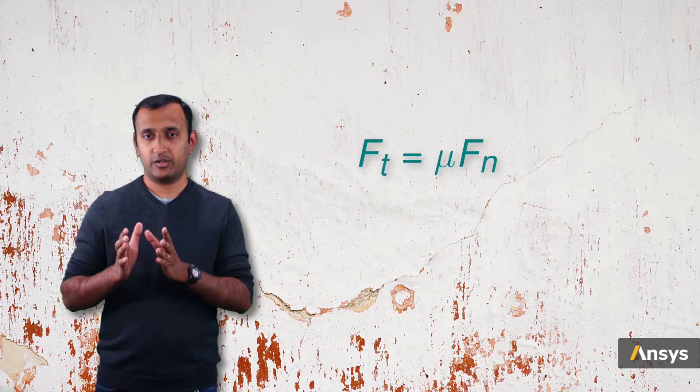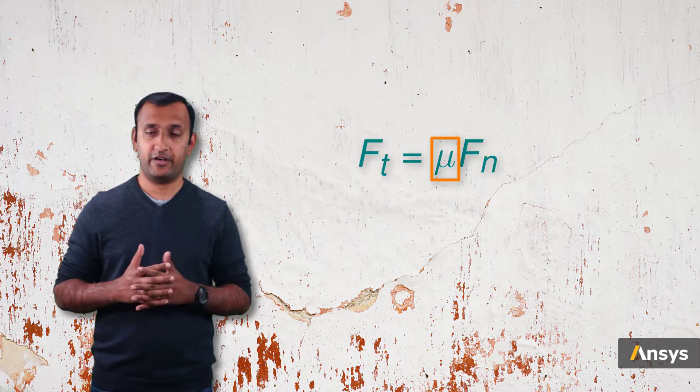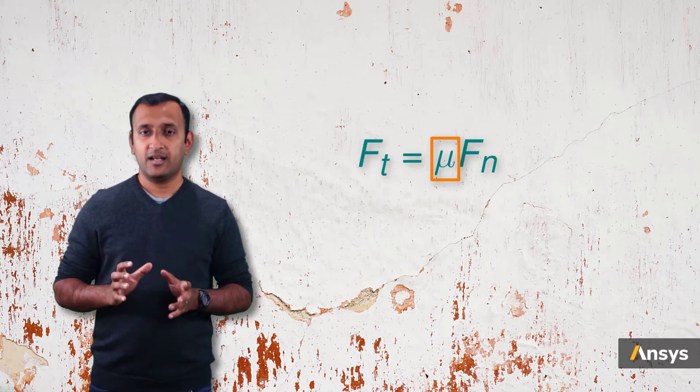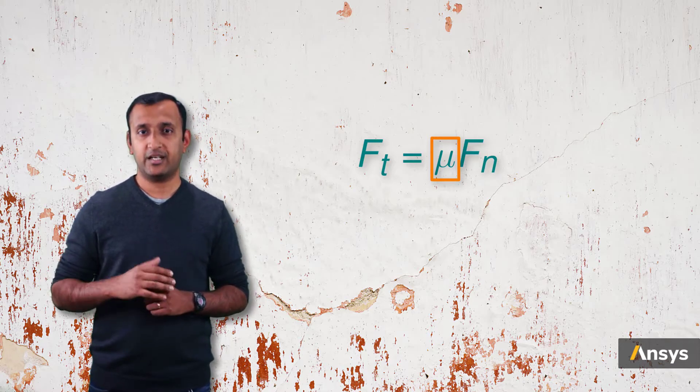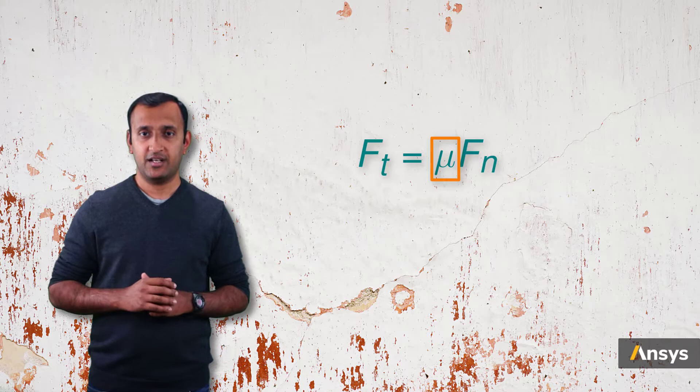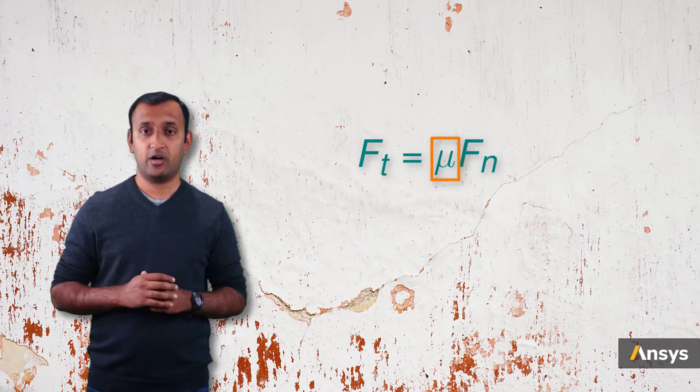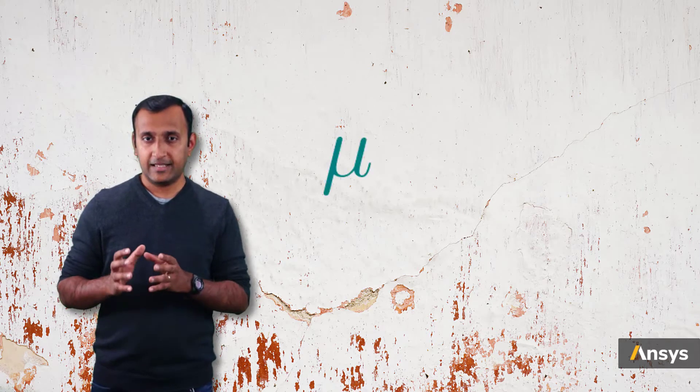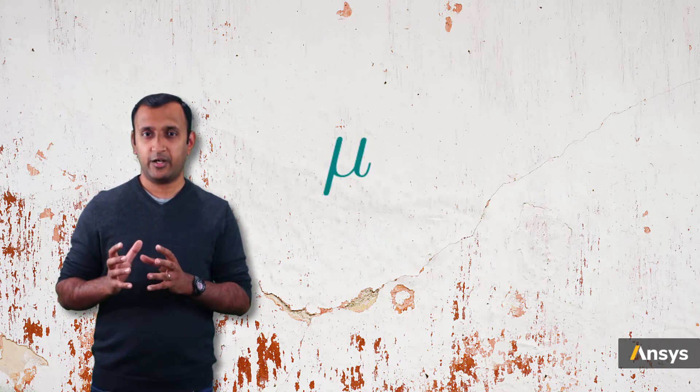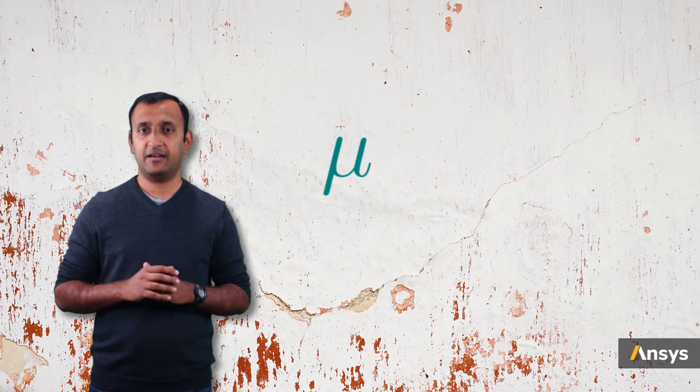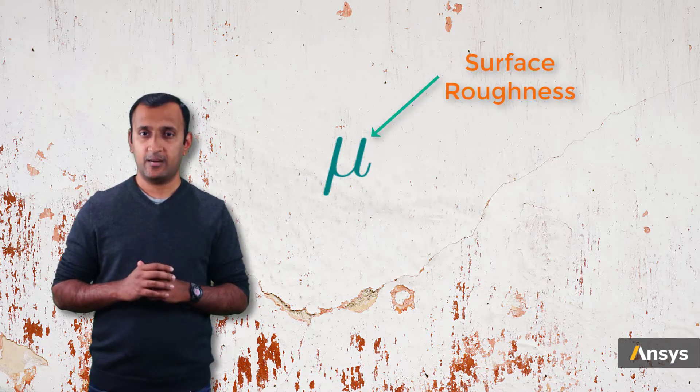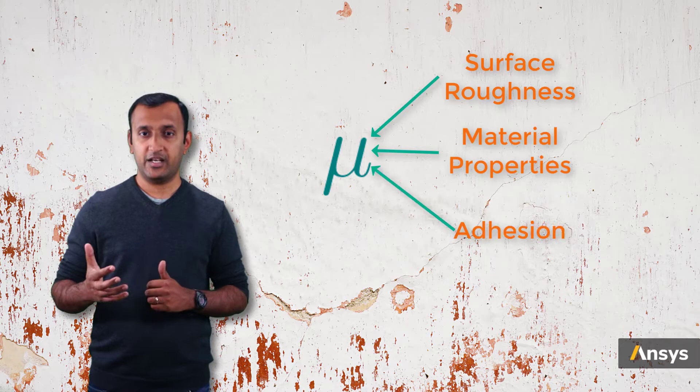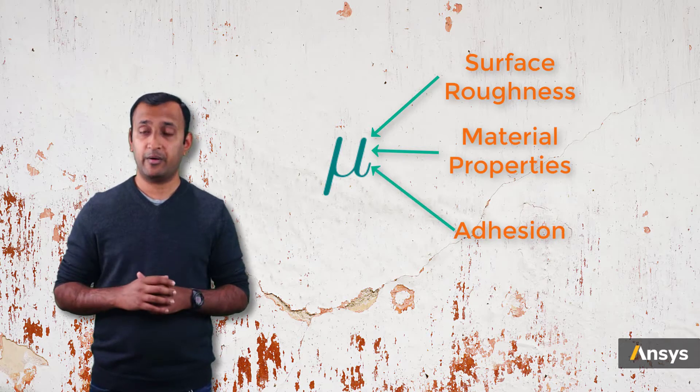Now let's focus on the coefficient of friction. This is a single property that encapsulates all the factors we mentioned earlier in modeling the frictional behavior between two surfaces. So this quantity is specific to a pair of surfaces and it depends on surface roughness, material properties, adhesion, etc. between the pair of surfaces.